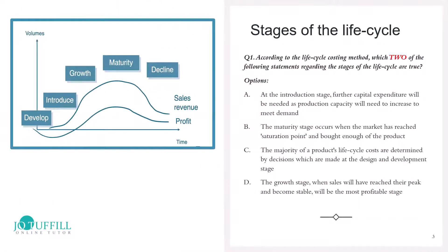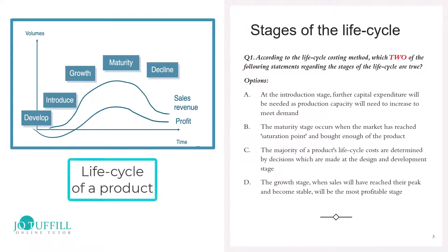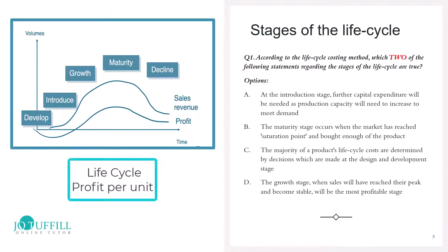The first question concerns the stages of the life cycle. On the left you'll see the diagram showing the life cycle of a product. We go through development, introduction, growth, maturity, and decline. At each point there is a different level of sales revenue and a different level of profit. Over time we cost our product so it gives us a positive profit over its life cycle, not by period.